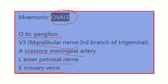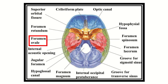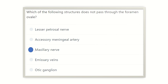So to recap: O for otic ganglion, V for V3 — the third branch of the trigeminal nerve, which is the mandibular nerve, A for accessory meningeal artery, L for lesser petrosal nerve, and E for emissary vein. The foramen ovale is located in the sphenoid bone.